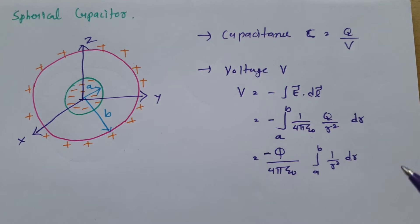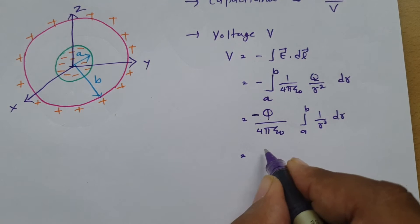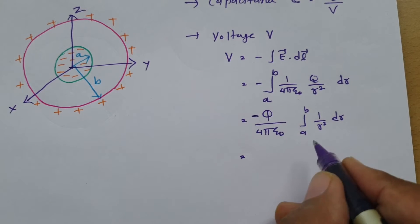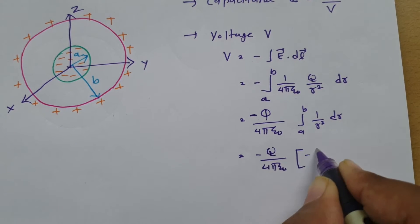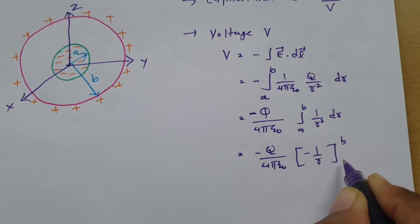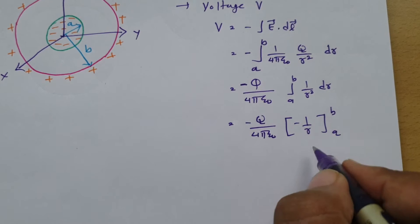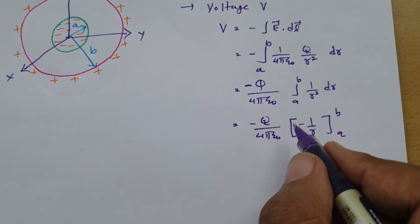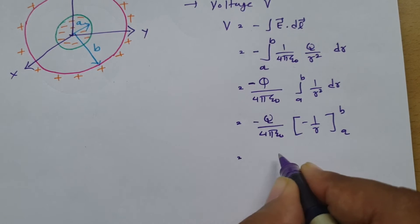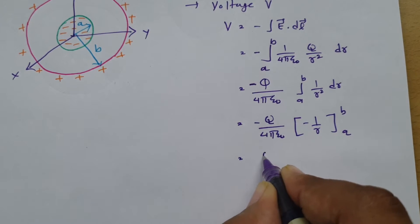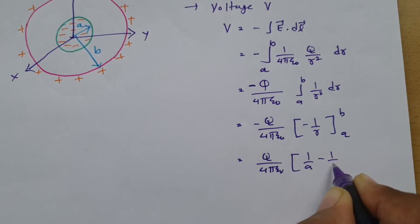There is a negative sign outside. Taking (1/4πε₀) common, we get (1/4πε₀) × Q × ∫[a to b] (1/r²) dr. The integral of 1/r² is −1/r, so we get (1/4πε₀) × [−1/r] evaluated from a to b. Applying the limits gives Q/(4πε₀) × (1/a − 1/b).